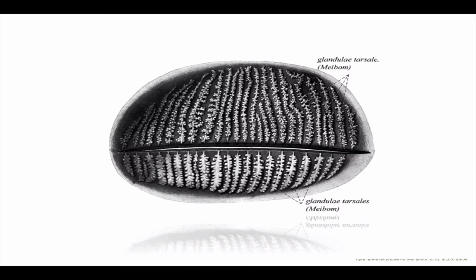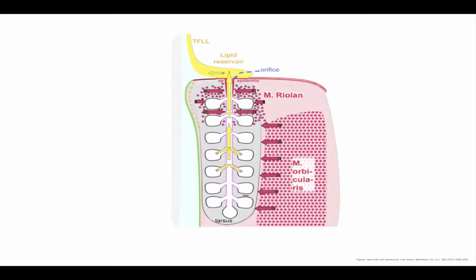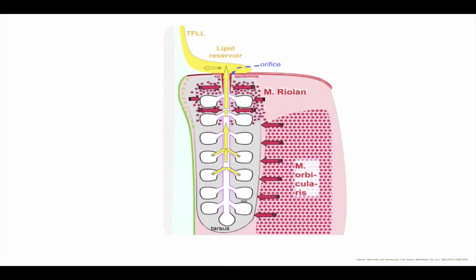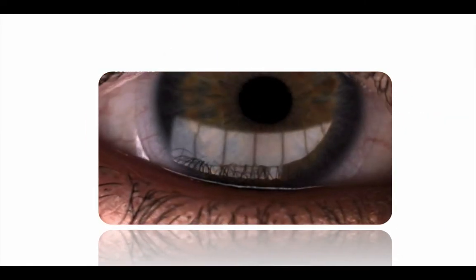But it is the blink that releases the meibum onto the ocular surface. Near the terminal portion of the central duct there are various striated fibers of Riolan's muscle, which is split from the orbicularis muscle and encircle the duct. During the blink, the orbicularis and Riolan muscles work to release an oily meibum onto the lid margin, working in tandem with each other. They create almost a milking type of action which helps to hold the meibum in and then release it upon a solid blink.